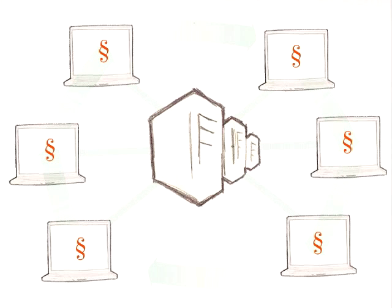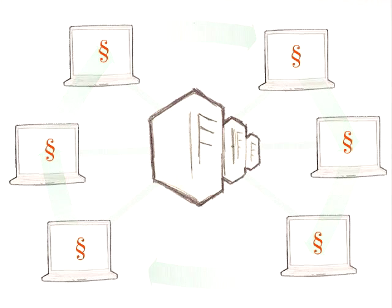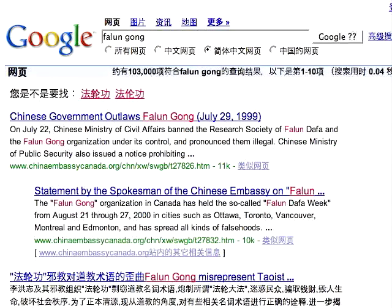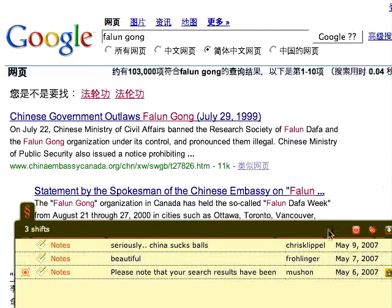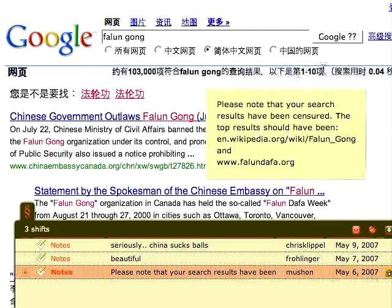ShiftSpace is an open source platform that attempts to subvert this trend by providing a new public space on the web. By pressing the Shift and Space keys, a ShiftSpace user can invoke a new meta layer above any web page to browse and create additional interpretations, contextualizations, and interventions, which we call Shifts.